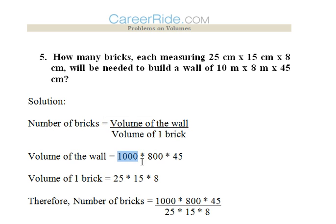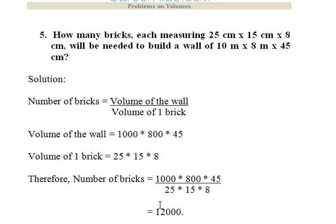So the volume of wall can be simply calculated 1000 into 800 into 45 and volume of one brick can also be calculated 25 into 15 into 8. So simply dividing the volume of wall by volume of brick we can simply calculate the number of bricks. The answer would be 12,000 bricks.